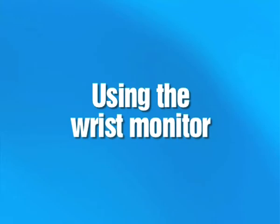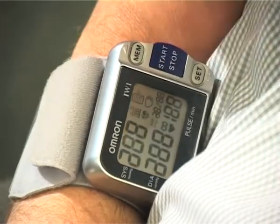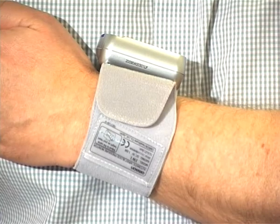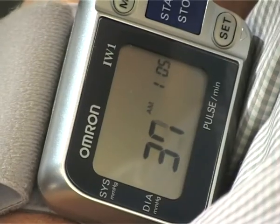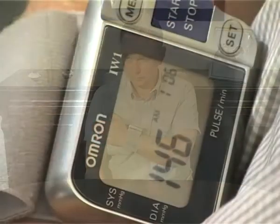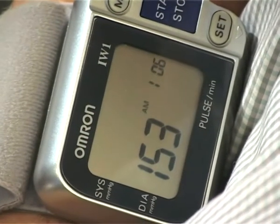Using the wrist monitor. To begin, place your arm across your chest so that the wrist monitor is the same height as your heart. Press the start stop button. All of the symbols appear briefly on the display and the wrist cuff starts to inflate. While the unit is inflating, sit still and do not talk or move until the measurement is completed.